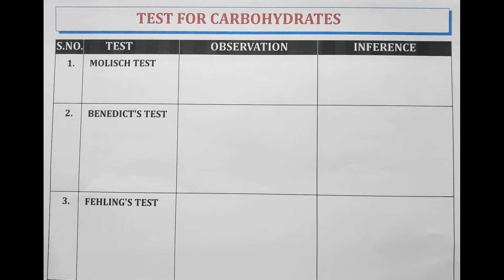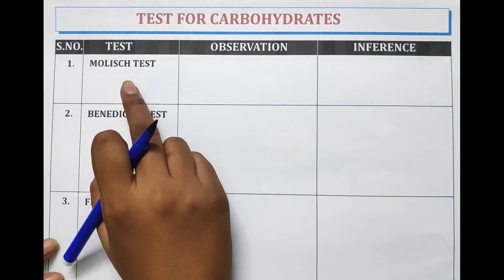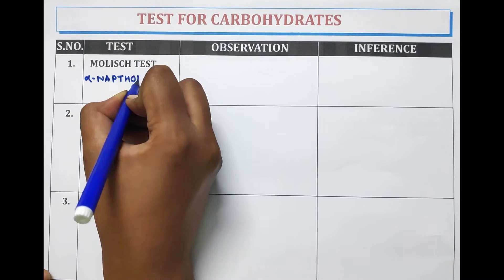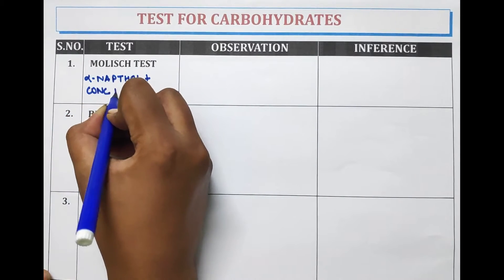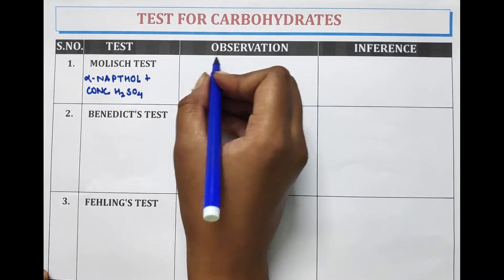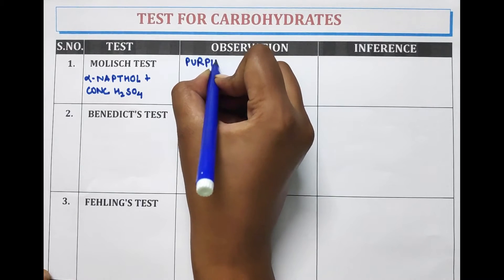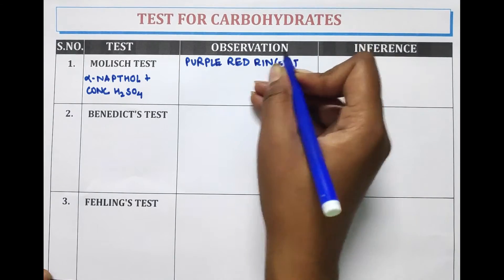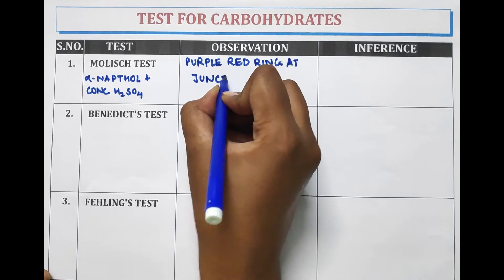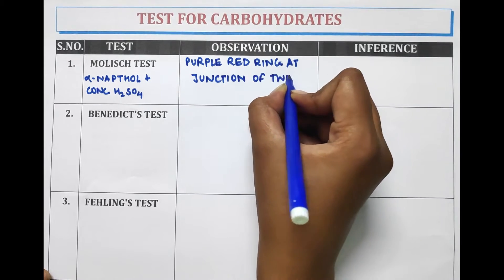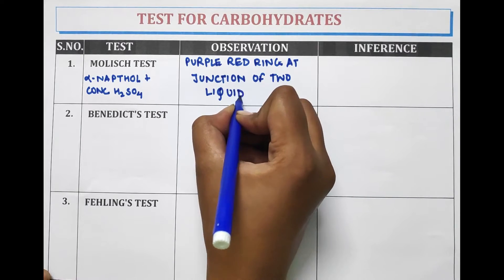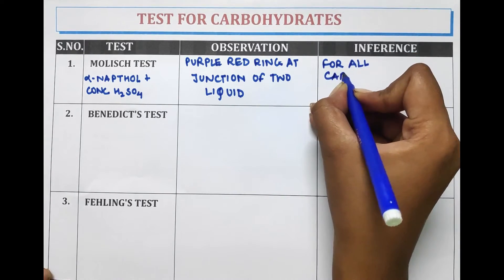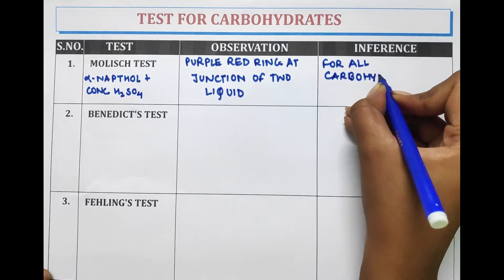Let's discuss the tests for carbohydrates. The first test is the Molisch test. Molisch reagent is alpha-naphthol and concentrated H2SO4. The observation is a purple-red ring at the junction of two liquids. Molisch test is the identification test performed for all carbohydrates.